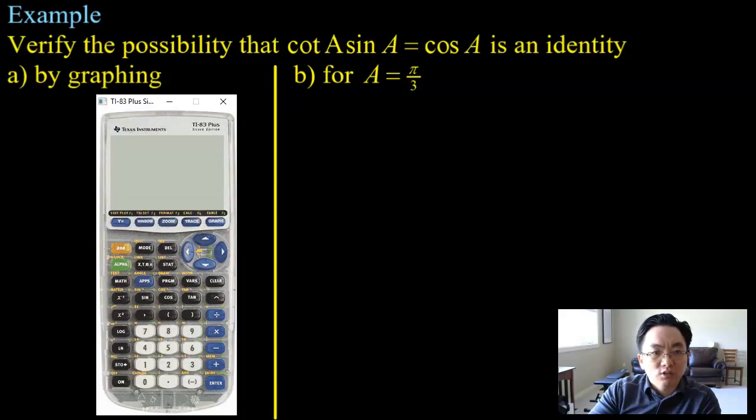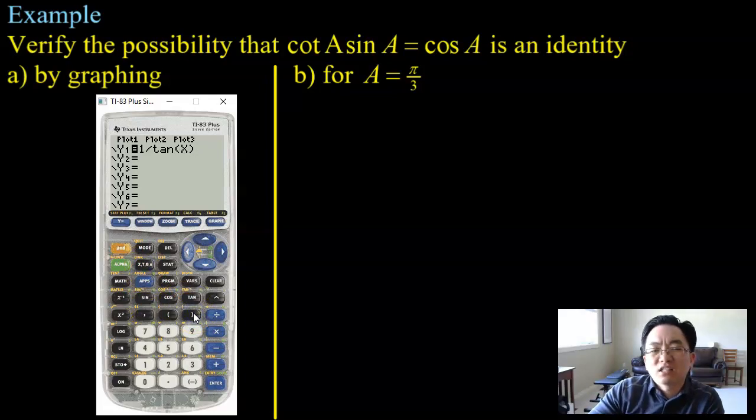So here I've got the graphing calculator, and all I'm going to do is I'm going to go into y equals, and I'm going to type in the left-hand side of this alleged identity. So cotangent is 1 divided by tan x, and I can also type it in as cos x over sine x because that's what cotangent A is also equal to. And then, of course, I have to multiply by sine x.